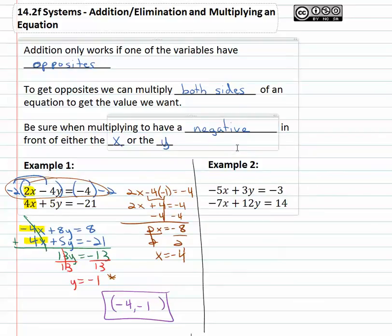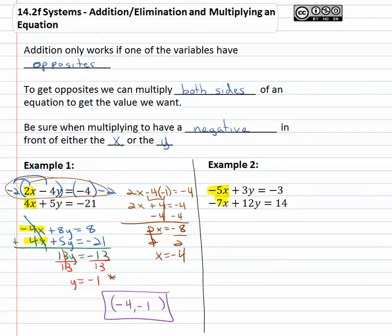Let's try another example, where we have to do a little bit of work to get the opposites we want. In example two, we might look at the x's and say, can we easily get five and seven to be opposites of each other? Well, we can't really multiply five by something and get seven. We can't multiply seven by something to get five. But maybe we'd be more interested in the y's. We can get opposites in front of the y's, we already have a positive twelve. To get a negative twelve, we just have to multiply the first equation by negative four.